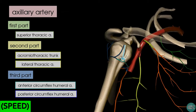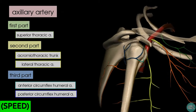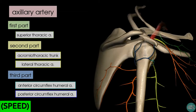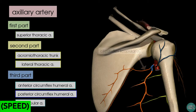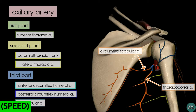You can see the anterior circumflex humeral artery here in light blue, running in front of the surgical neck of the humerus and anastomosing with the posterior circumflex artery. Rotating fully round to the back, you can see the subscapular artery coming off. The subscapular artery is the largest branch of the axillary artery, and you can see two of its branches here: the scapular circumflex artery and the thoracodorsal artery.